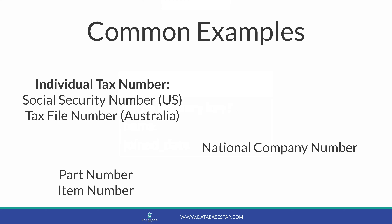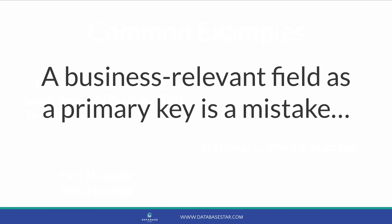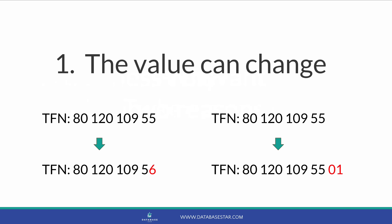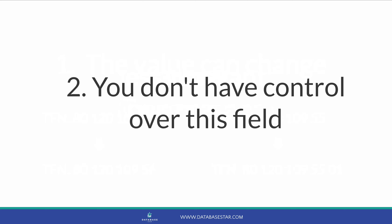Another example is a part number or item number for an e-commerce system provided by the vendor. However, using a business-relevant field as a primary key is a mistake for two reasons. First, the value can change, which should not happen for a primary key — someone can change their tax number or company ID. Second, you often don't have control over this field; vendors control part numbers and the government controls social security numbers. If the format changes or a value is reassigned, it can mess up your database.